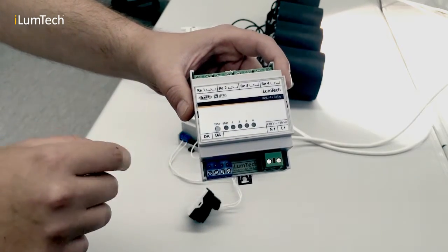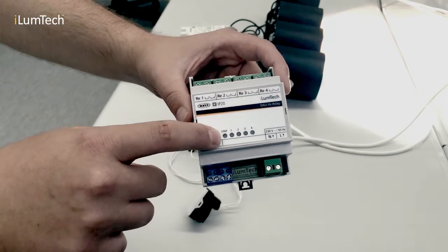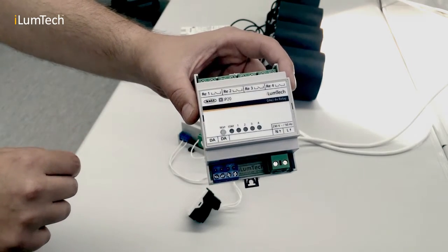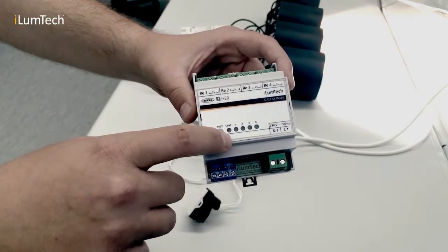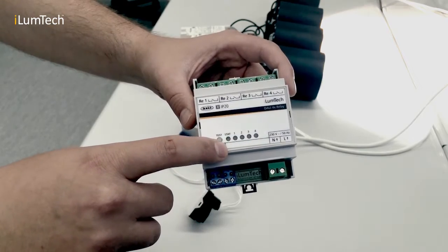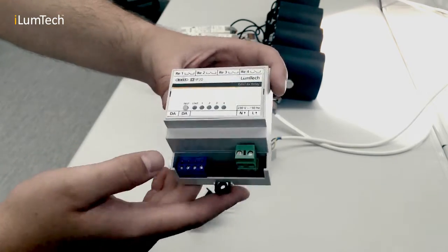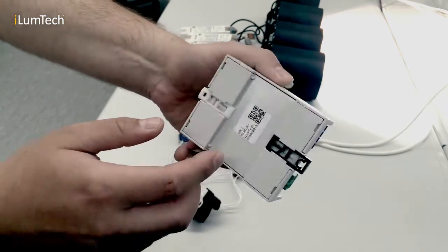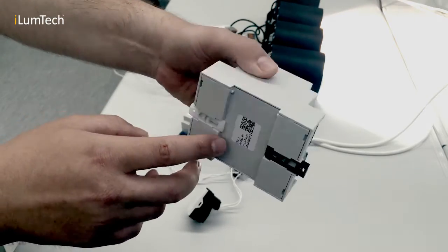On the front panel of the device is an integrated push button used for manual control of the relays for testing purposes and an additional five device status indicator LEDs. The device is housed in a standard DIN rail mountable box for easy installation in electrical switchboards.